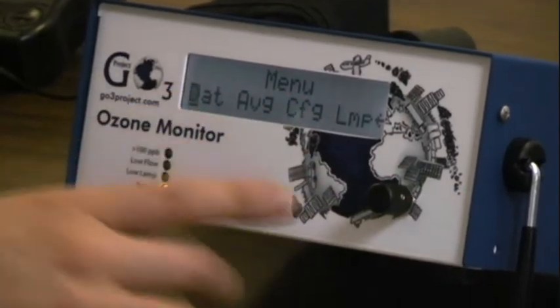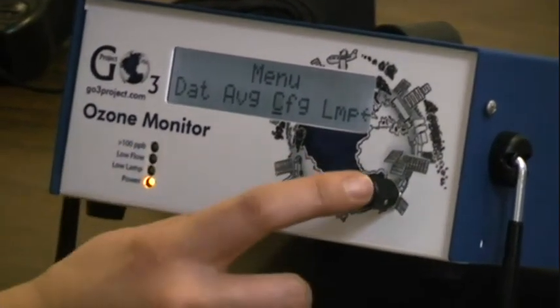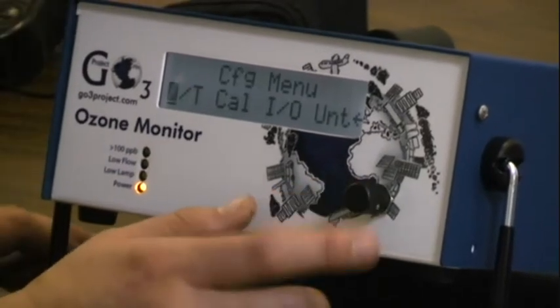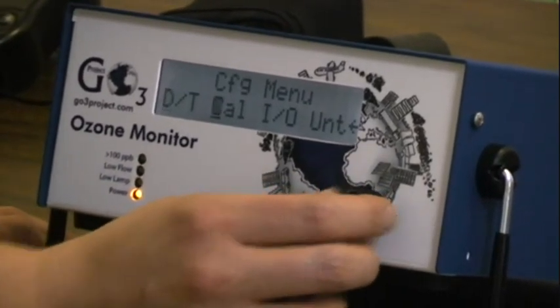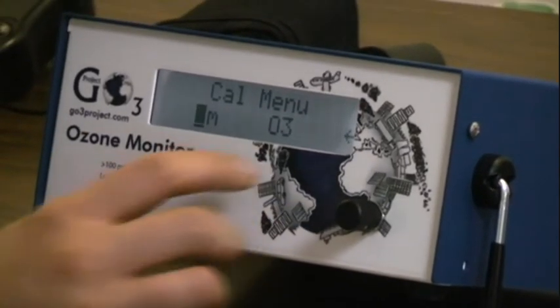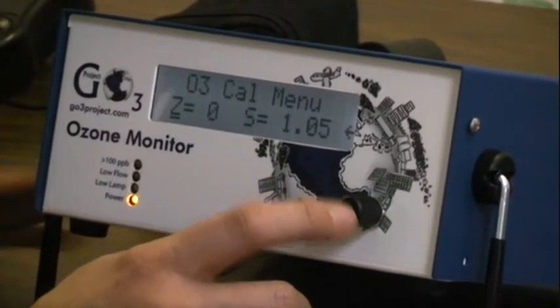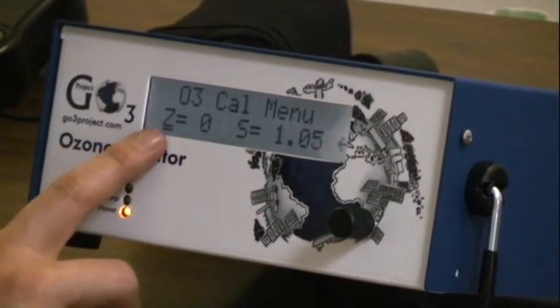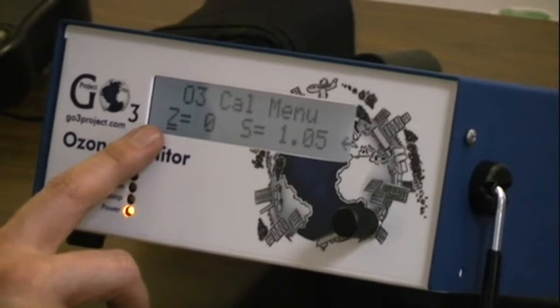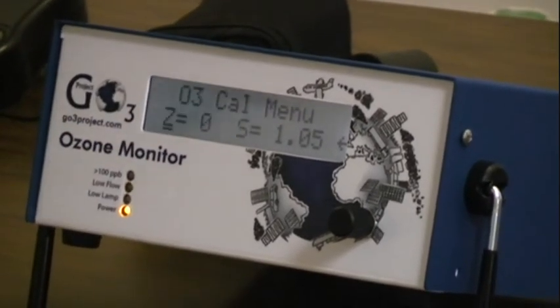You're going to go into the menu, over to CFG, click once. Go into CAL, C-A-L, click once. Go over to O3, and this Z is the offset. So this ozone monitor's offset is zero.